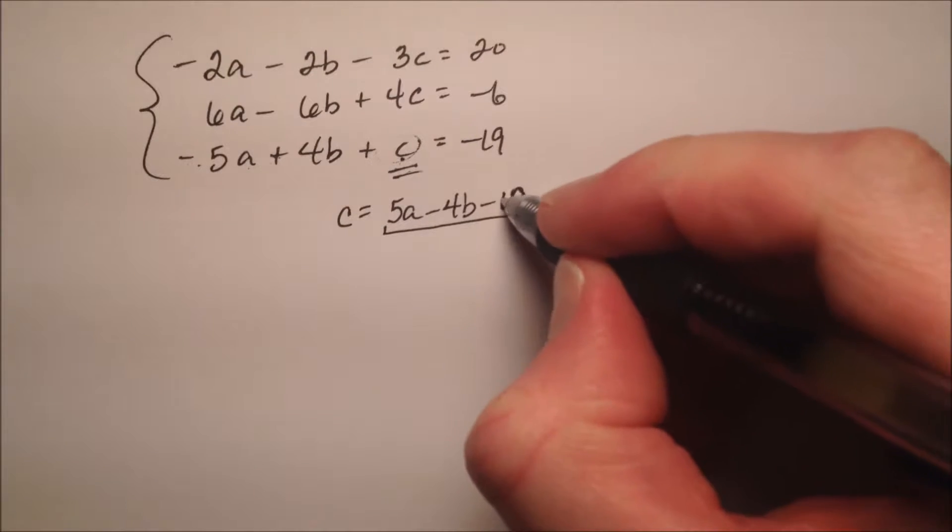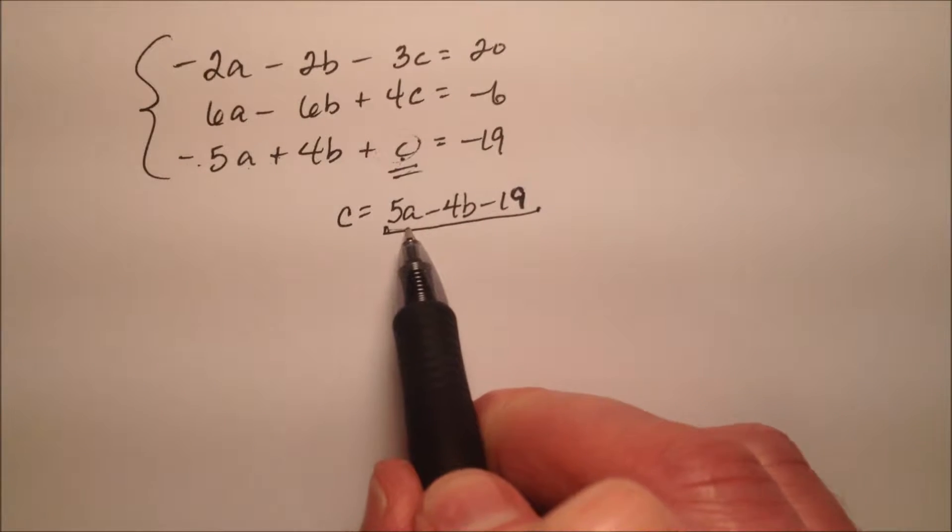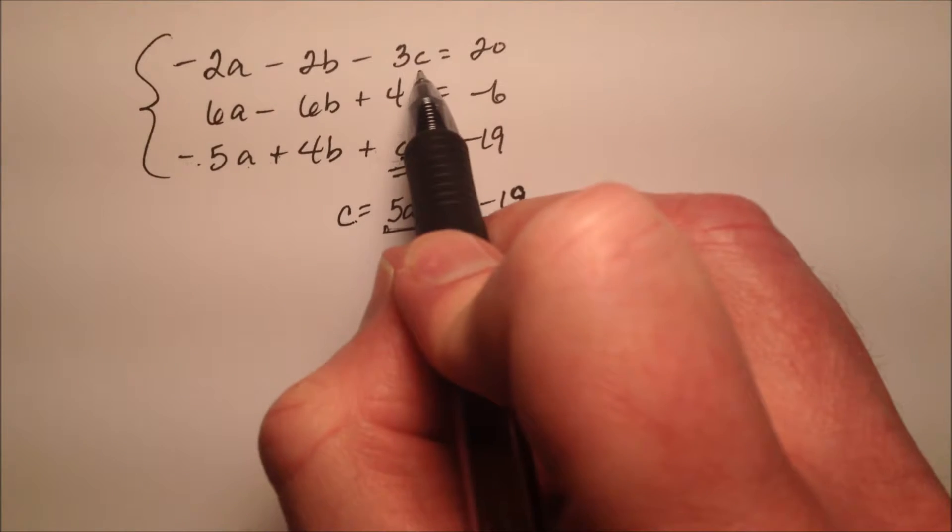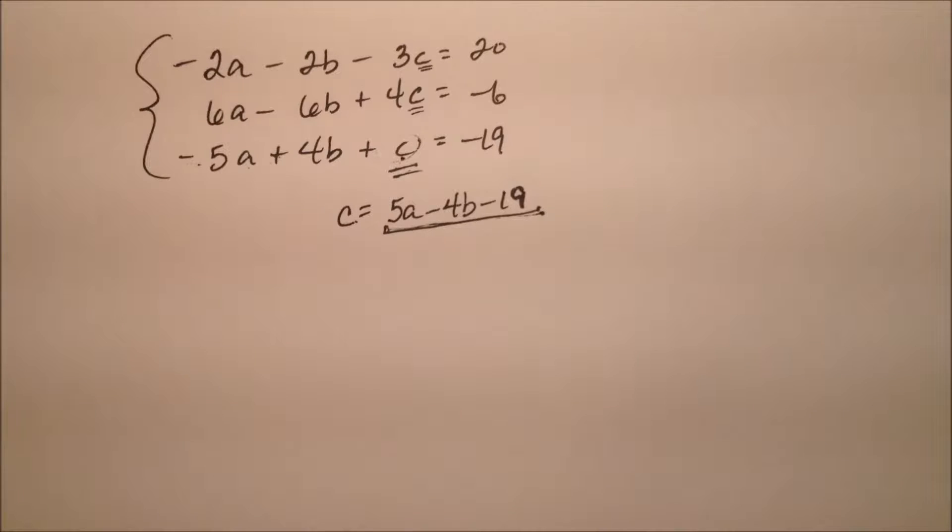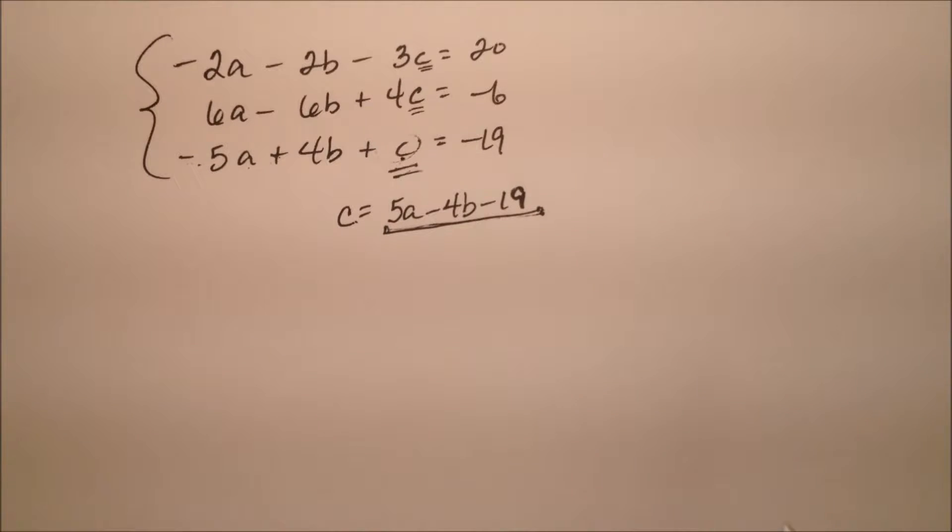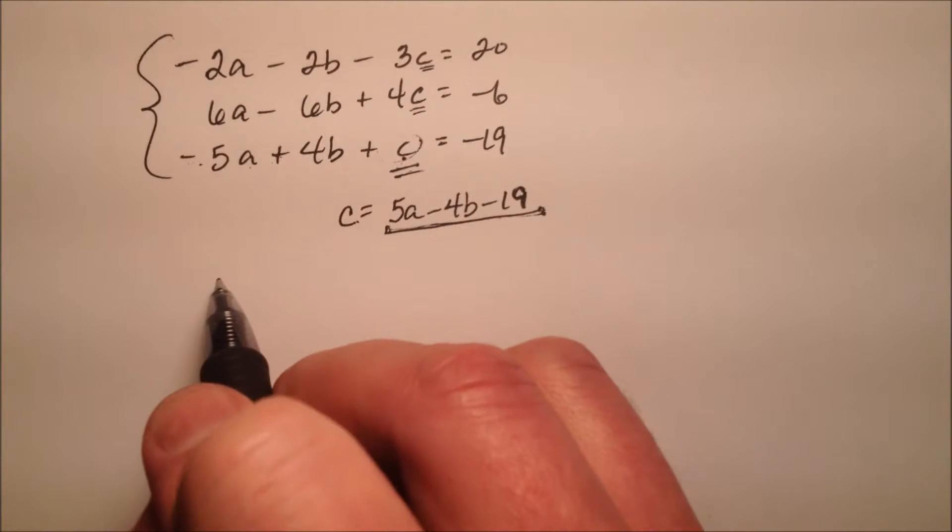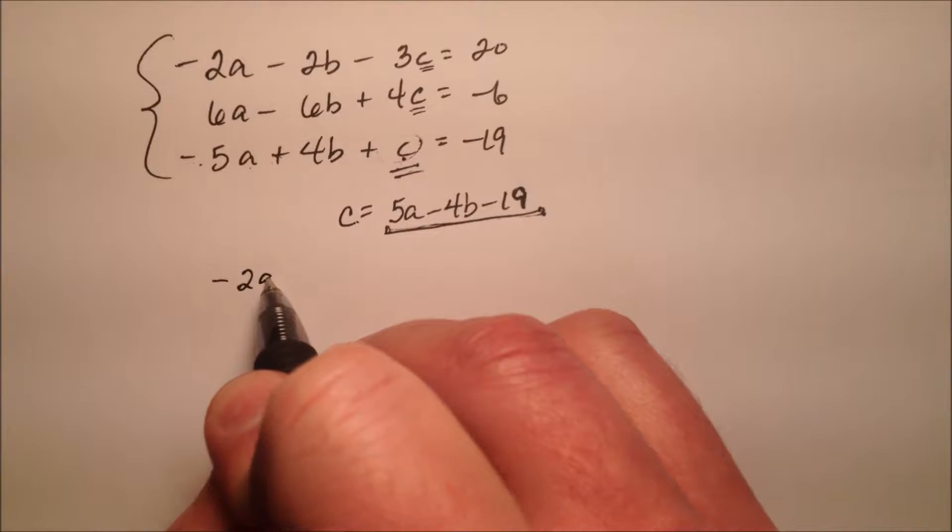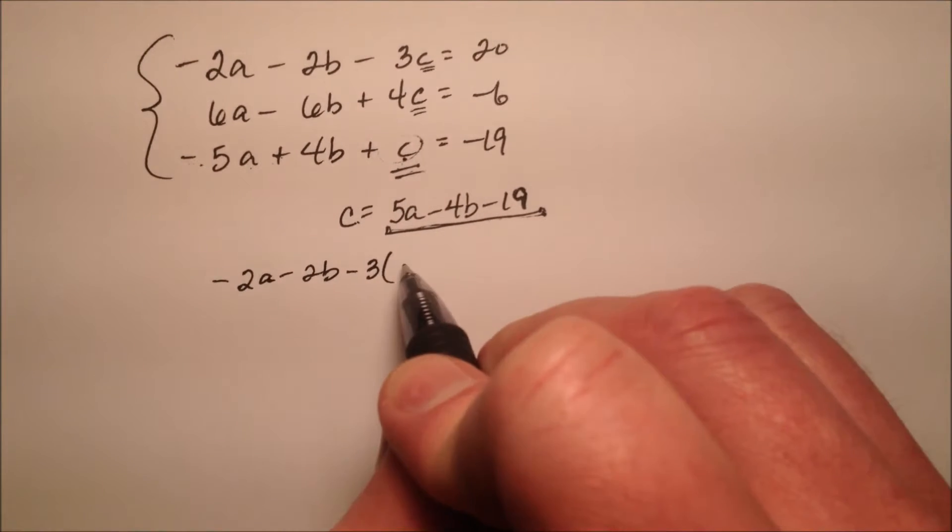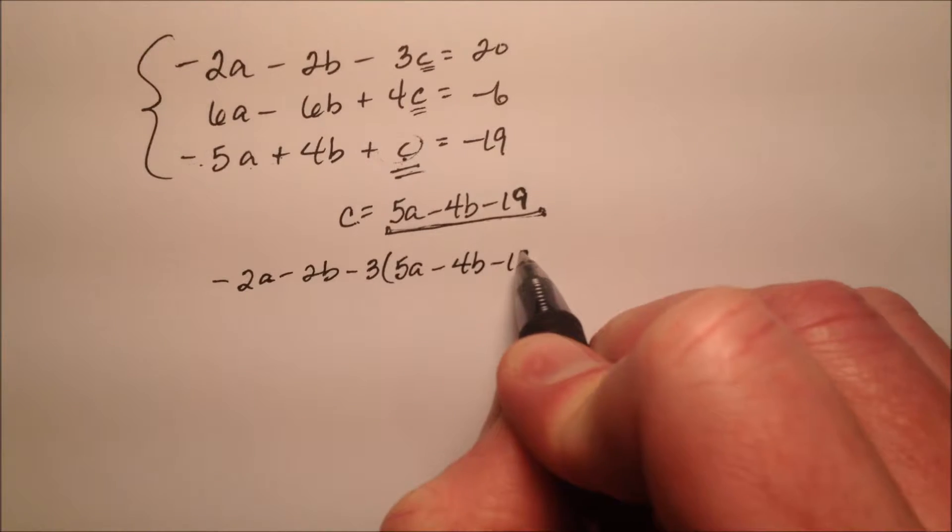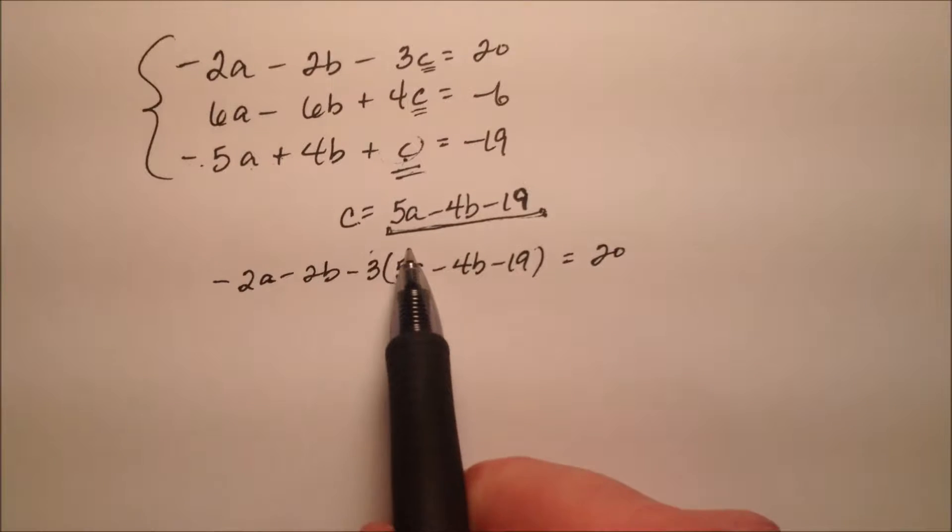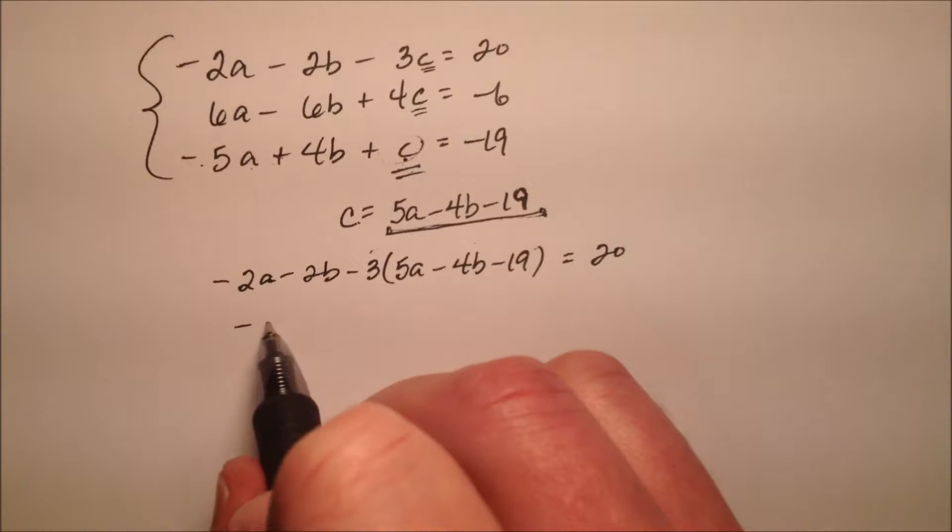So here I have this equation, and this expression 5a minus 4b minus 19 is equivalent to c, so when I see the variable c in these other two equations, I can substitute this 5a minus 4b minus 19 instead. So let's go ahead and do that. So the first equation was negative 2a minus 2b minus 3c, but my c is going to be 5a minus 4b minus 19, and that's going to be equivalent to 20. So let's go ahead and distribute this negative 3 and simplify this.